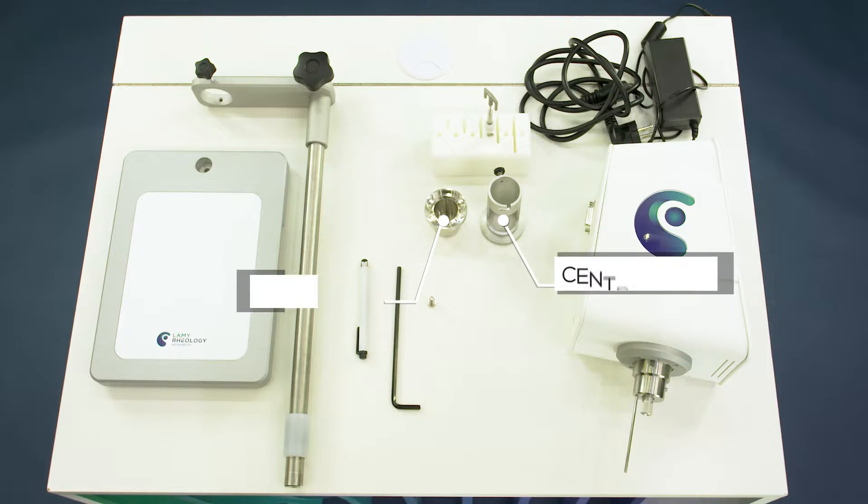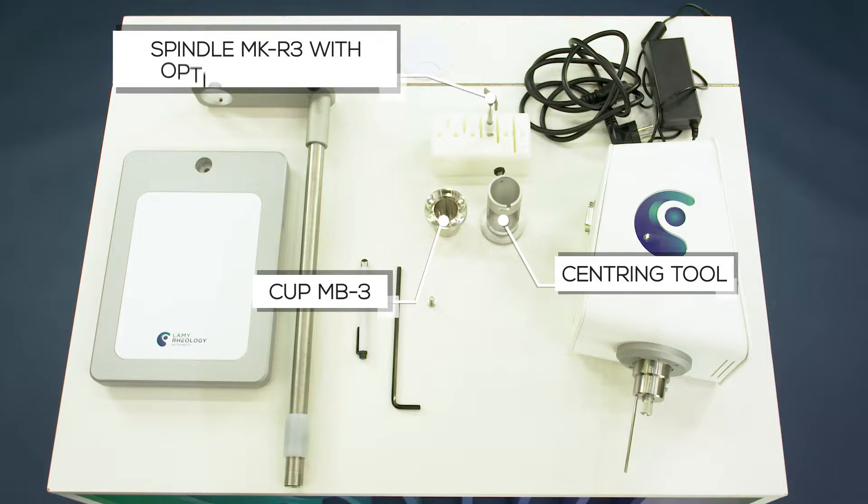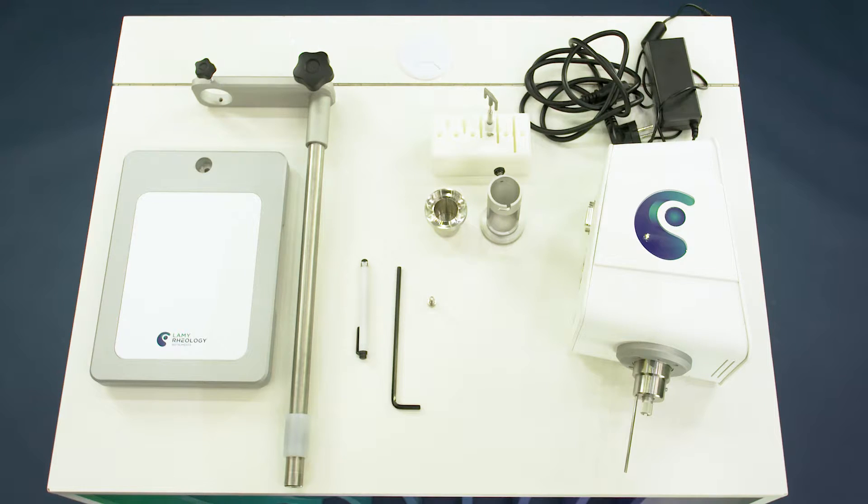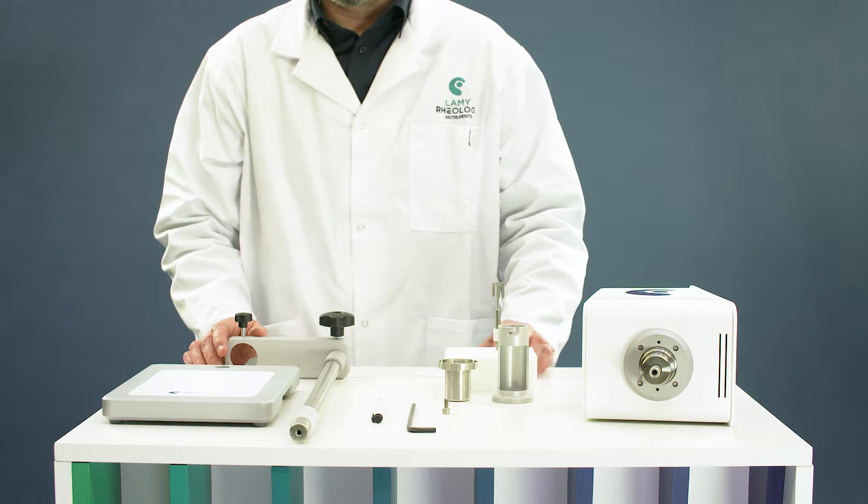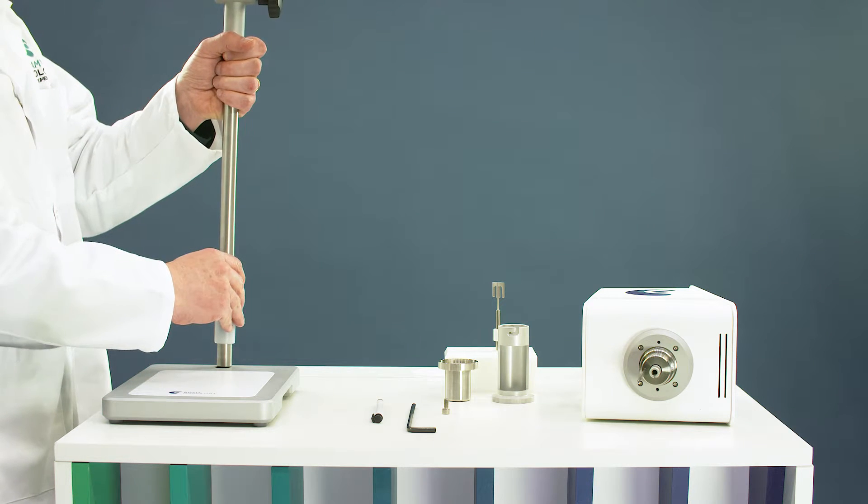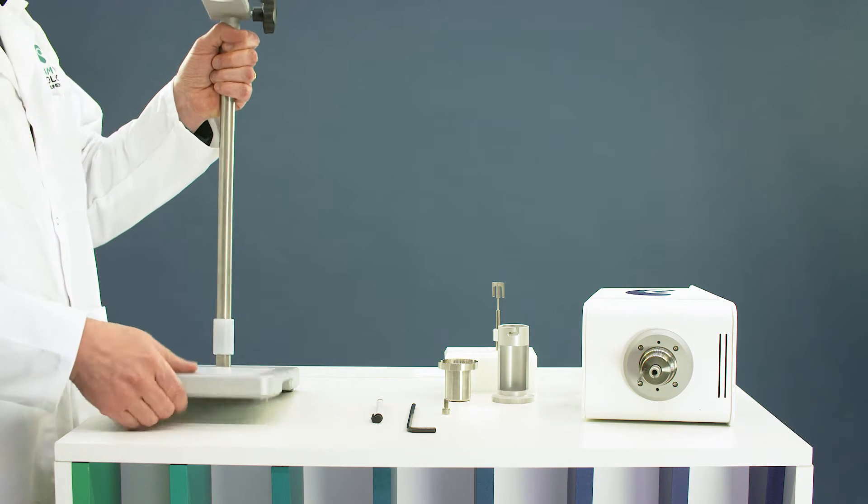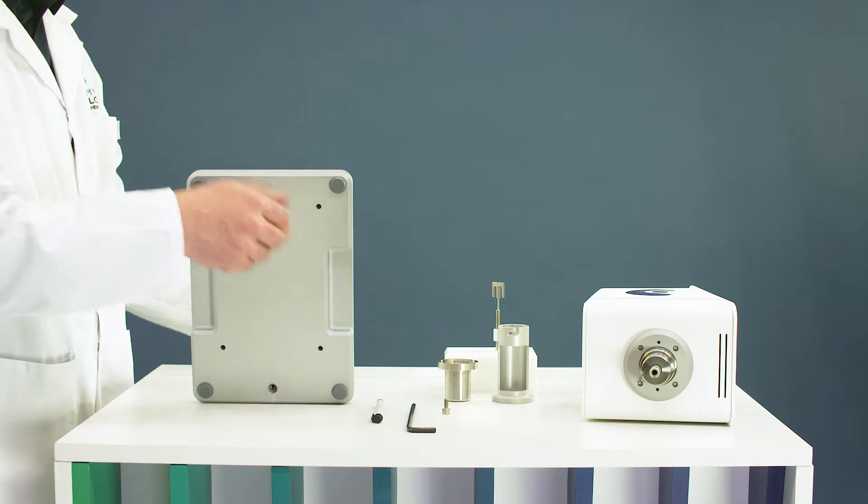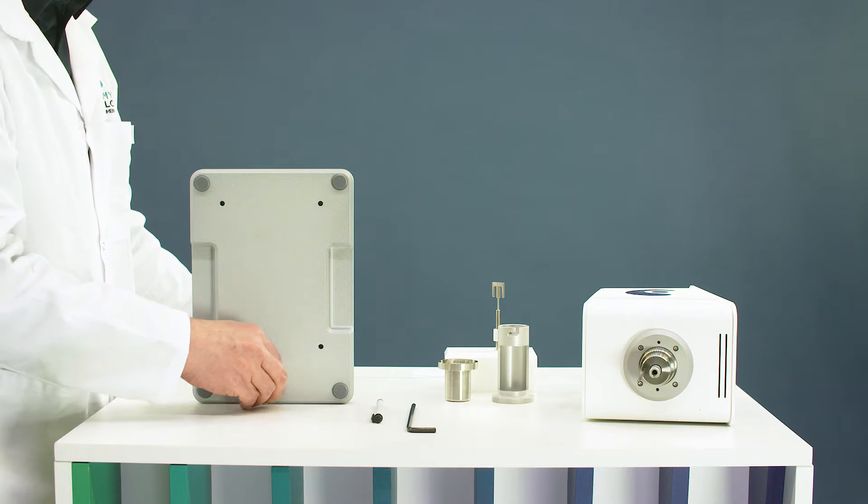Unpack all accessories according to your configuration. Mount the stand to install the viscometer. Present the rod with the arm on the lower plate. Fix the rod with the provided screw.